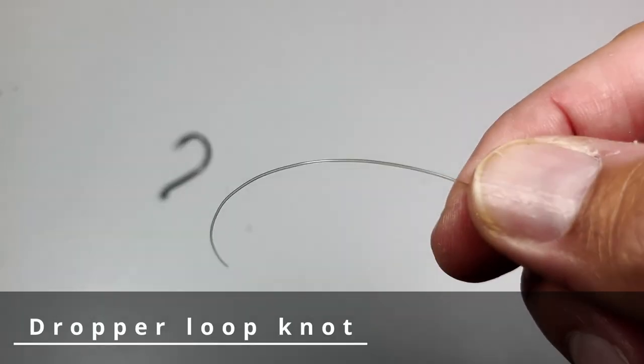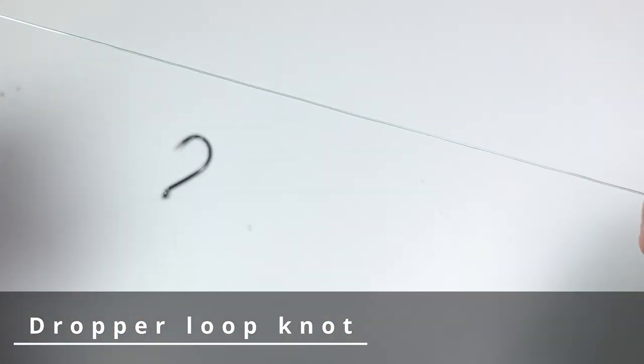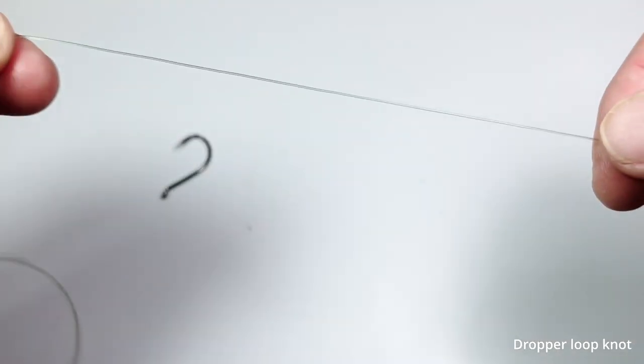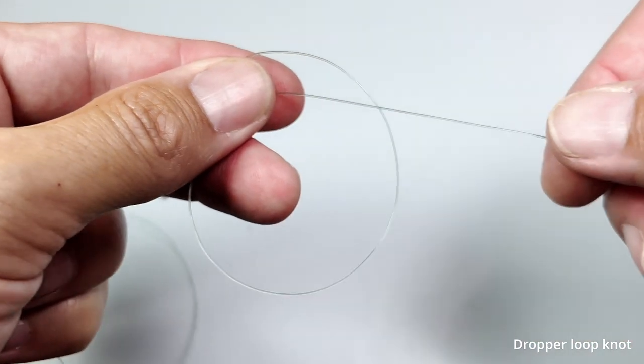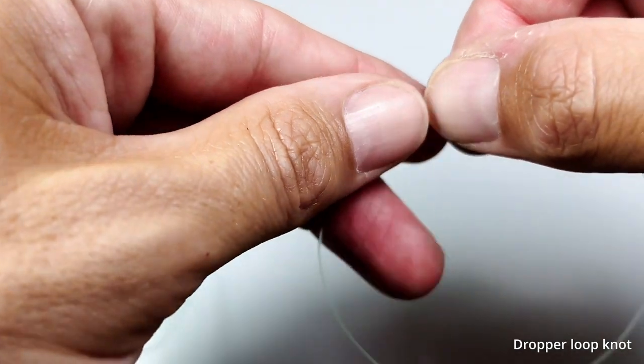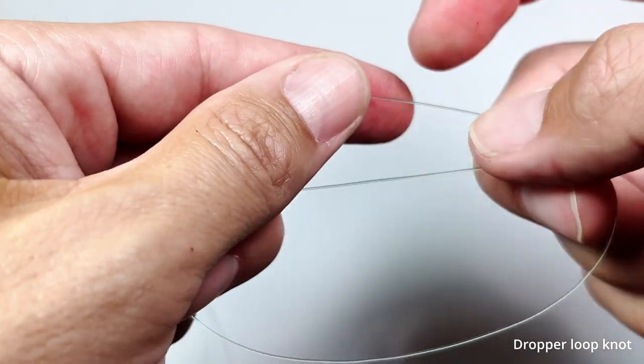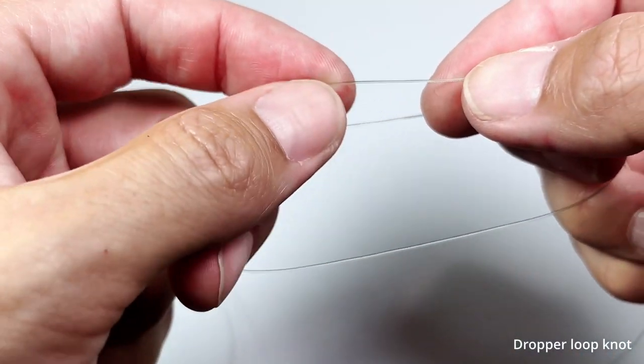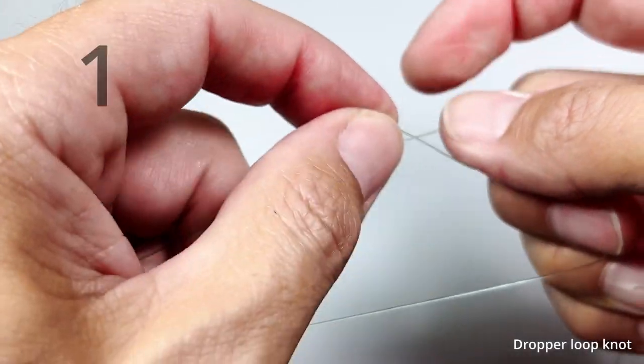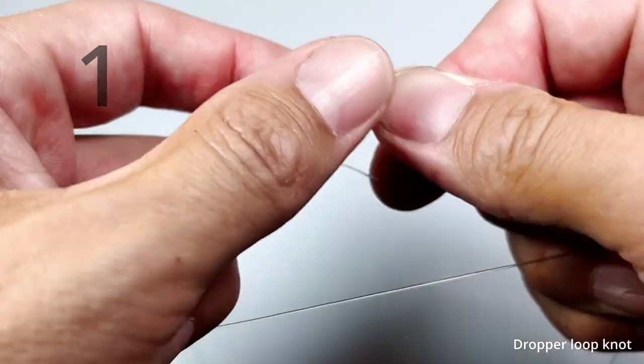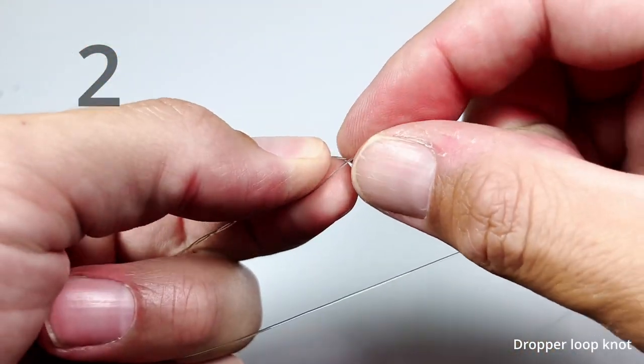The next knot is a dropper loop knot. You pull the tag in enough to make a large loop. Using the middle fingers of each hand, you pull the loop taut. Then use your index fingers and your thumbs to twist the line on itself, three or four times.